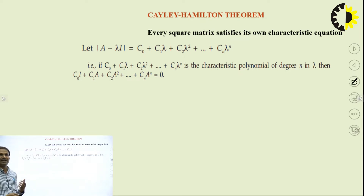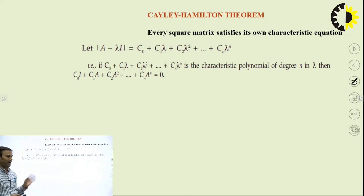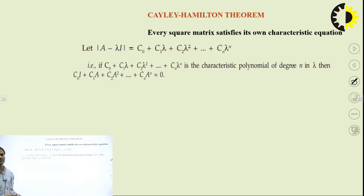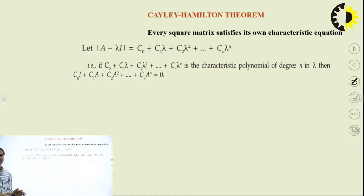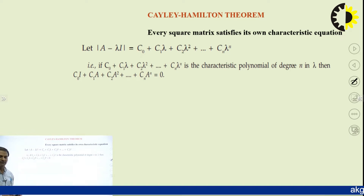What the Cayley-Hamilton theorem suggests is that this characteristic equation can also be satisfied by the matrix itself. So we replace all values of lambda by A. By putting lambda equals to A, we get an expression like C₀I plus C₁A and so on, equal to zero. Every matrix satisfies its own characteristic equation.